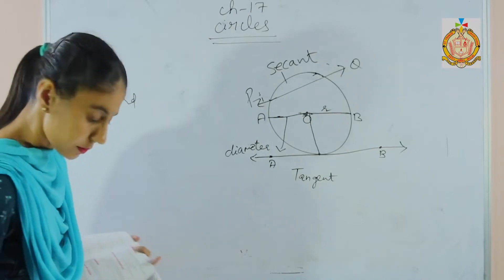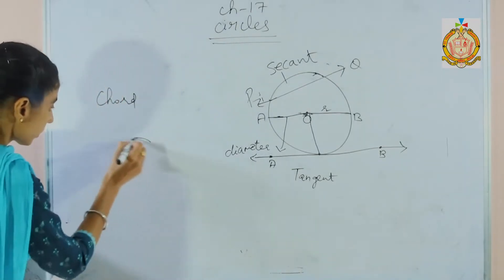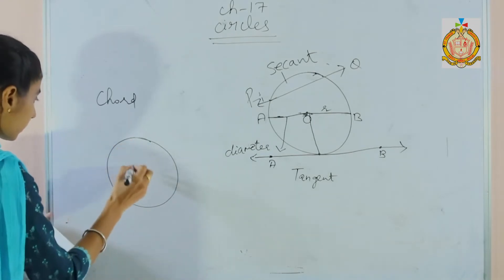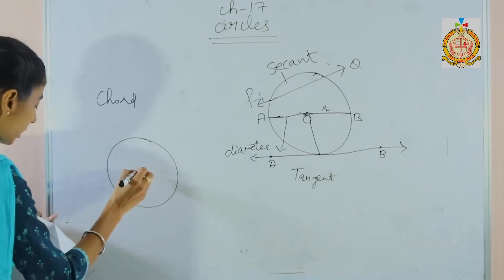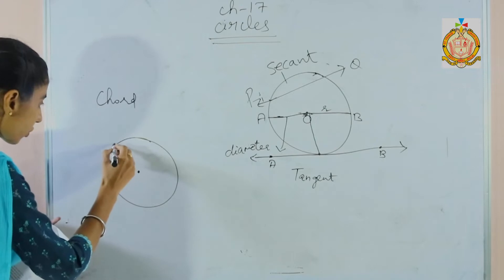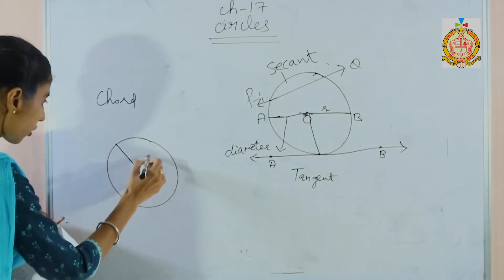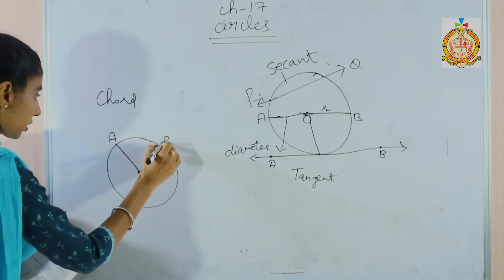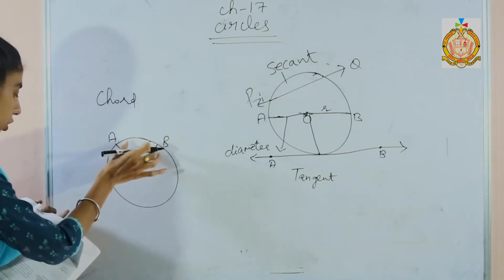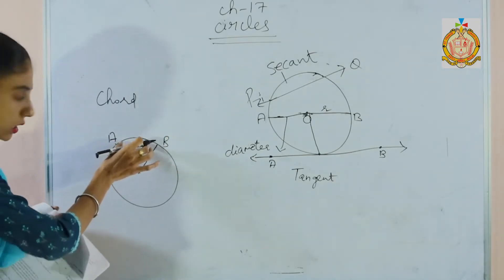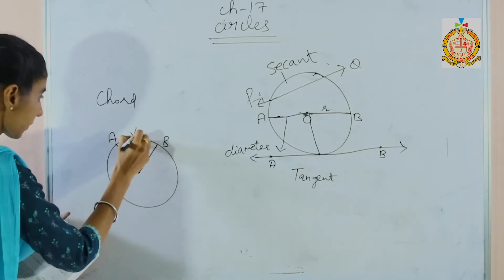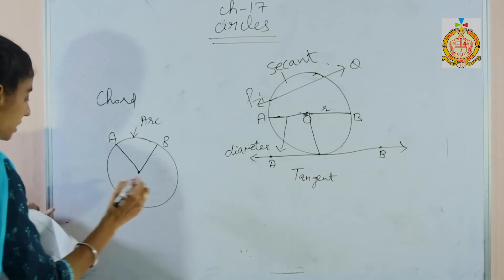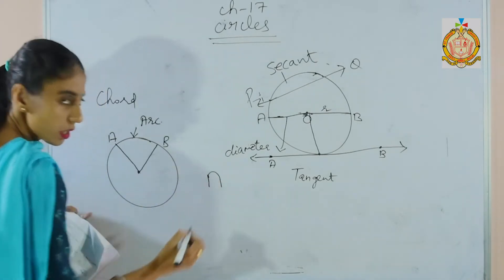Next is the arc. An arc of a circle — this is the center of the circle — and an arc is a portion of the circumference of a circle. This is the arc, this portion of the circumference of the circle. It is denoted by a specific symbol.